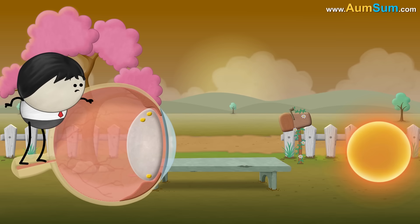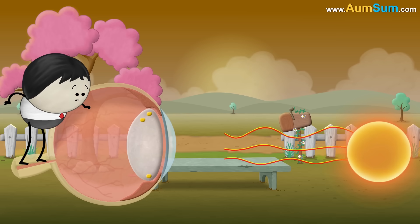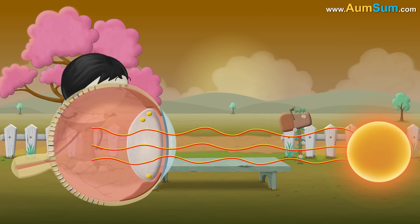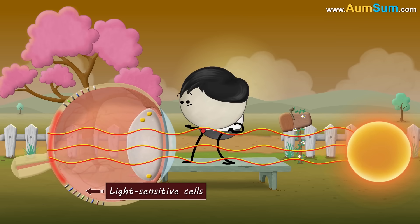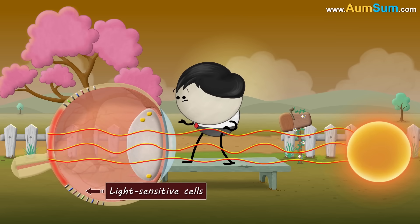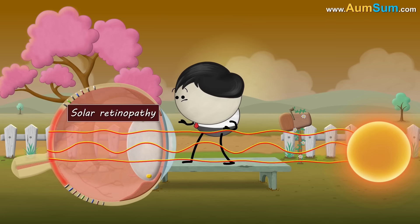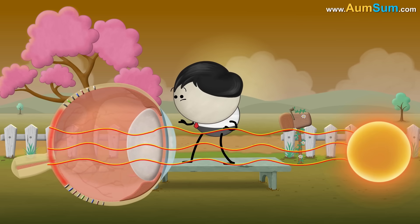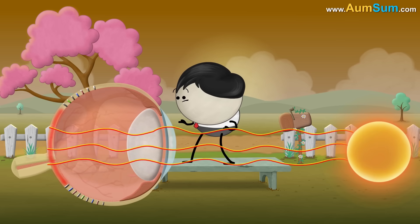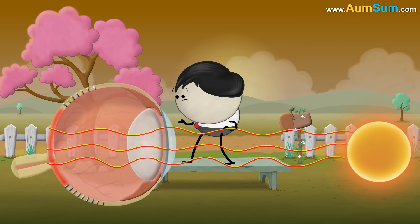Moreover, the ultraviolet radiation even damages the light-sensitive cells in the retina which help us to see. This condition is called solar retinopathy. Solar retinopathy can lead to temporary or even permanent blindness.